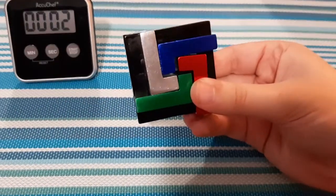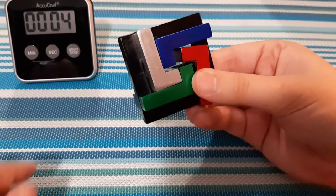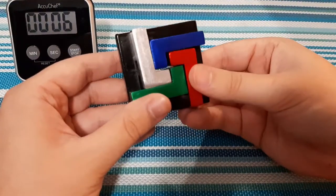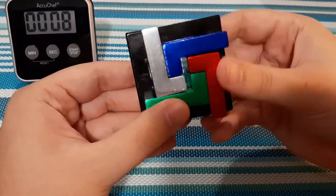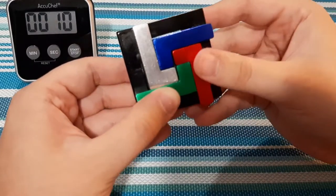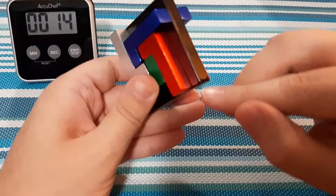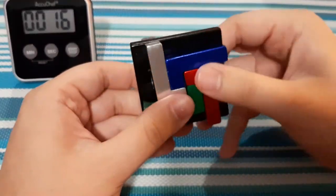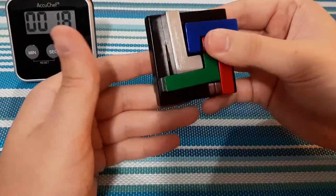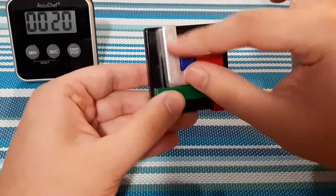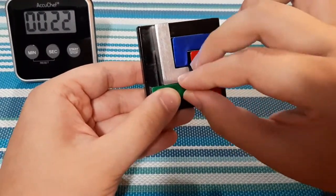I'm going to start the timer here, so you guys know exactly how long it really takes me. Okay, so the first thought of seeing this is we're going to have to, since it's solid around the entire black square, we're going to have to move these in a way that the length of them can slide out in the middle.